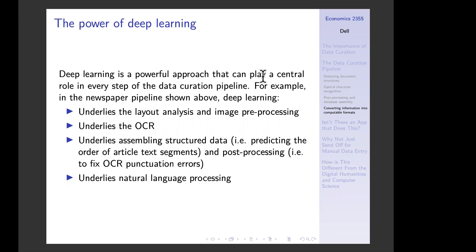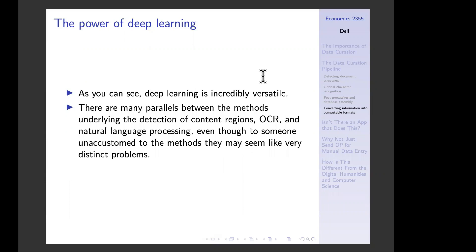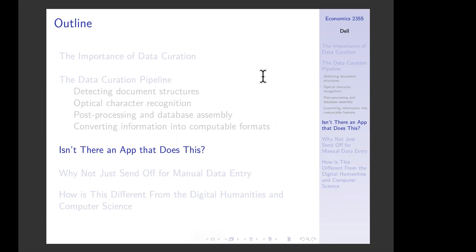Deep learning can play a central role in every step of the pipeline. It is what makes layout analysis and image pre-processing possible; OCR uses deep learning; assembling structured data and post-processing often uses deep learning; and it underlies natural language processing. The methods used to do computer vision tasks like document layout analysis and NLP are actually very similar — even though to people unfamiliar with deep learning, these seem like very different tasks, they're quite analogous.